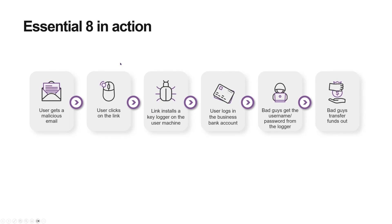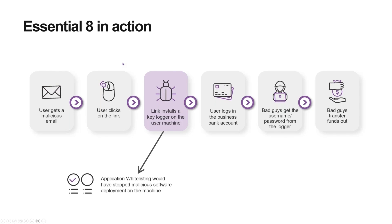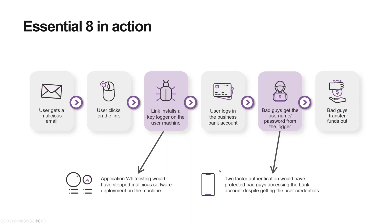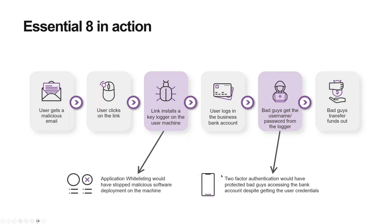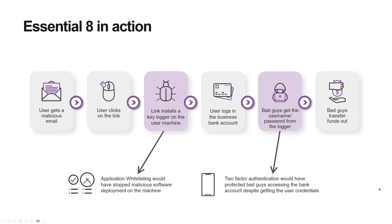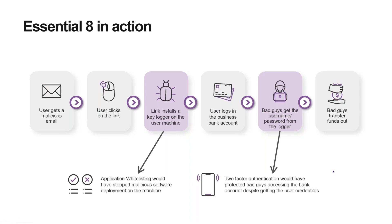So how does the Essential Eight work? It's pretty simple in this scenario. The application whitelisting and application controls we spoke about would have stopped that malicious software from being deployed in the first place. And two-factor authentication protects against bad actors actually getting access to the system — even if they do have the credentials, they don't have that second factor of authentication. So it is really designed to help with that basic scenario, and it does have different maturity levels.